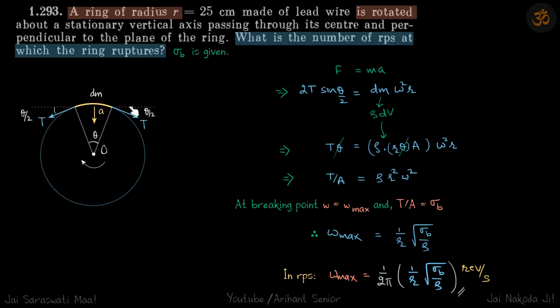Let's write F equals ma on that element. So 2T sine theta by 2 equals dm into a, where a will be centrifugal acceleration, centripetal acceleration, that will be omega square r.